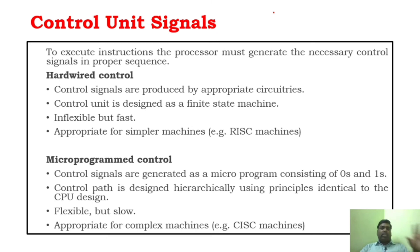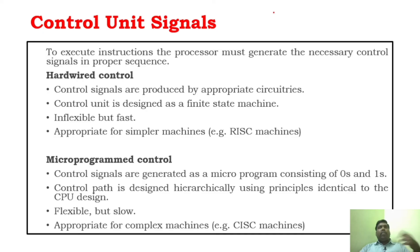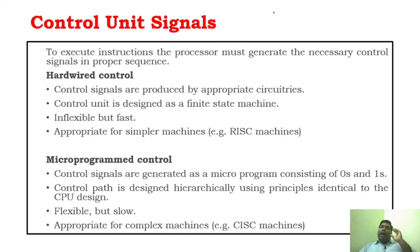We know that the processor is the central processing unit, and we often say that the processor is the one which controls all the operations inside the computer. That is, it provides control signals for each and every operation. We have already seen about the multi-bus organization and single-bus organization. You would have seen an instruction decoder, and it provides the control signals for all the operations that take place. Today we are going to see how the processor is generating those control signals for each and every operation.